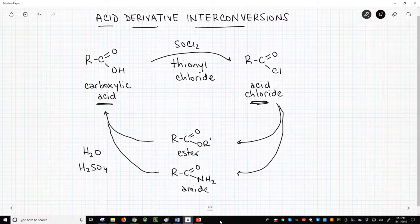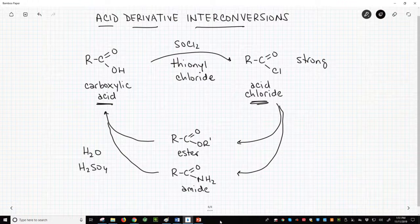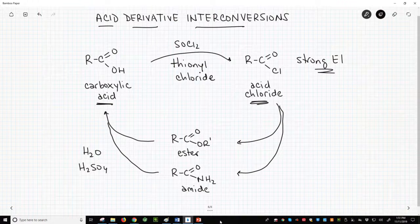Acid chlorides are more reactive than carboxylic acids. They are stronger electrophiles. Because they are more reactive, more electrophilic, they are more easily converted into other acid derivatives than the original carboxylic acid.